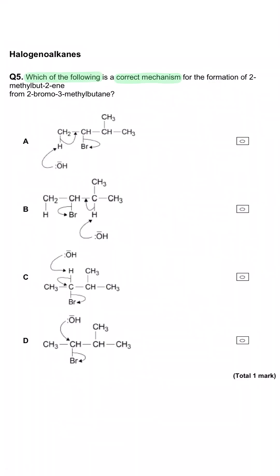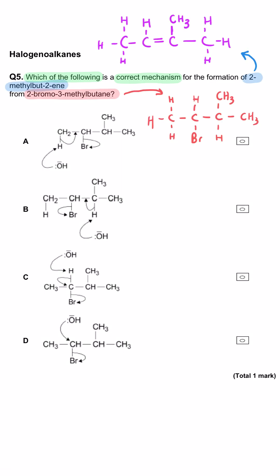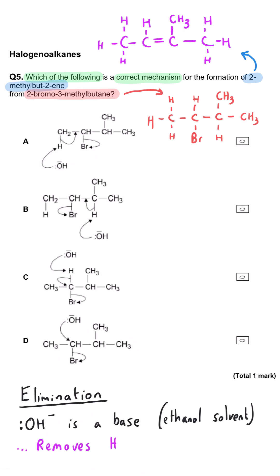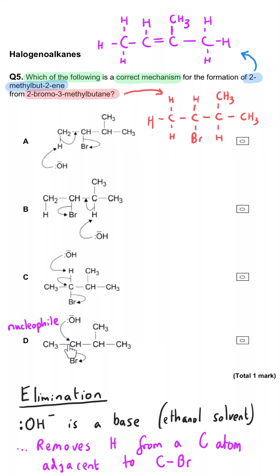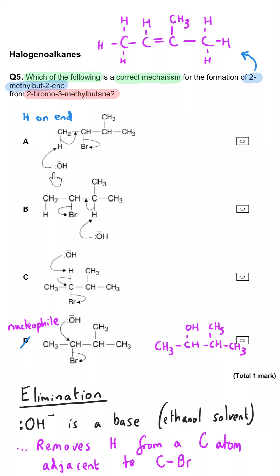Which is the correct mechanism for the formation of 2-methylbut-2-ene from 2-bromo-3-methylbutane? This is an elimination mechanism. Option D can be ruled out immediately because the hydroxide ion is acting as a nucleophile, attacking the electron-deficient carbon and substituting the halogen, making an alcohol. In option A, the hydroxide ion removes a hydrogen from the end of the chain, placing the double bond at position one and making 3-methylbut-1-ene.